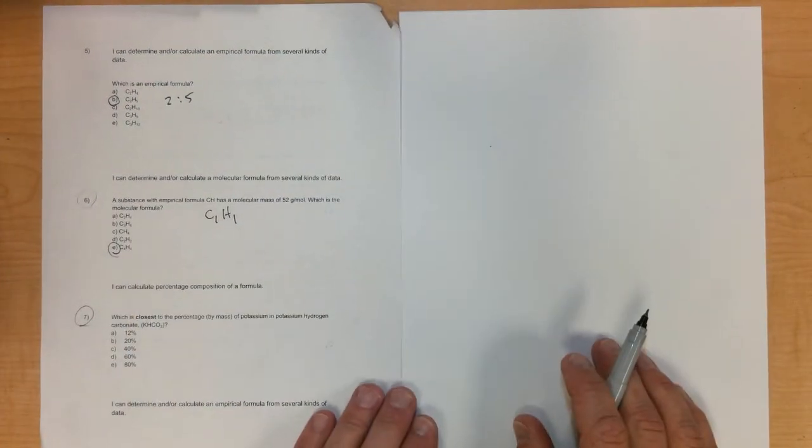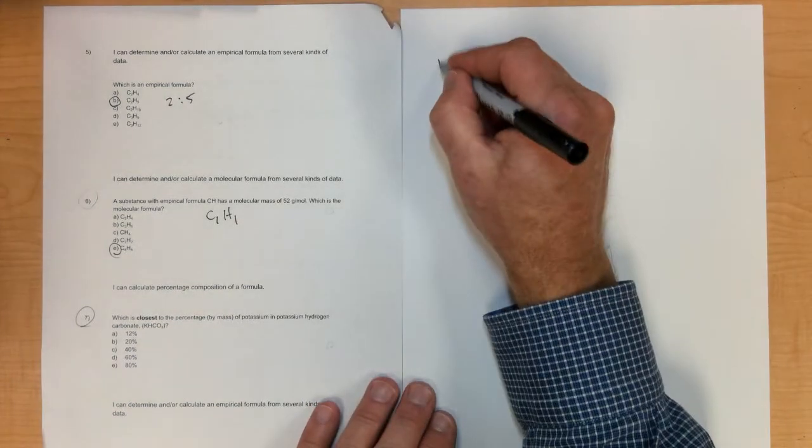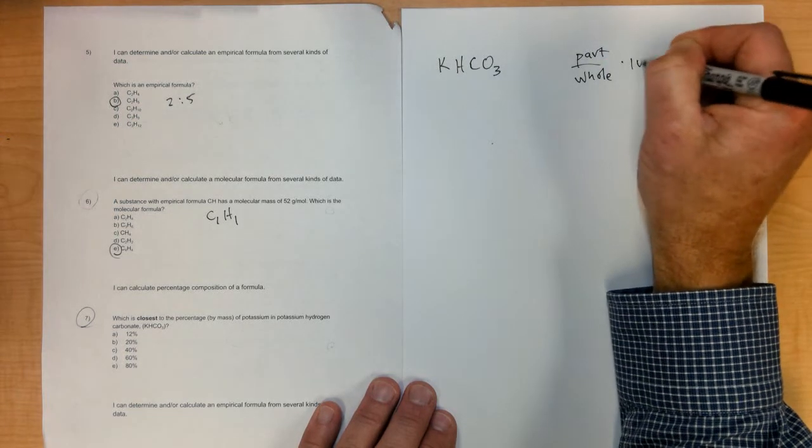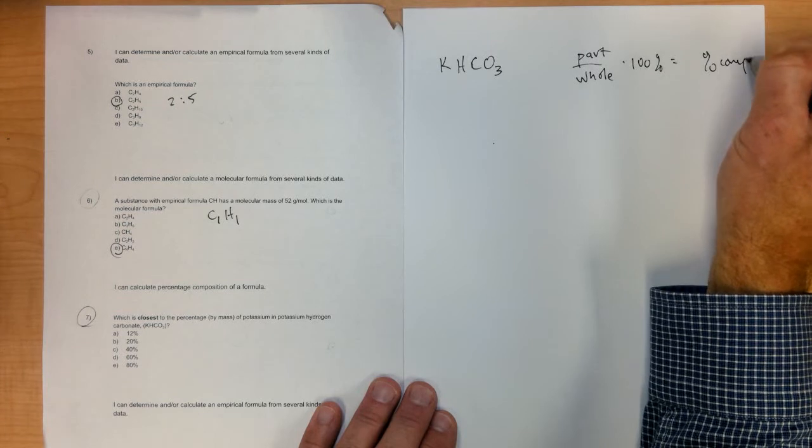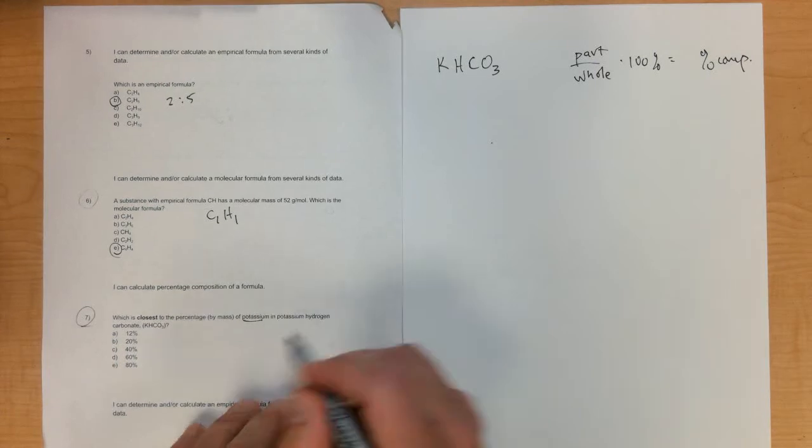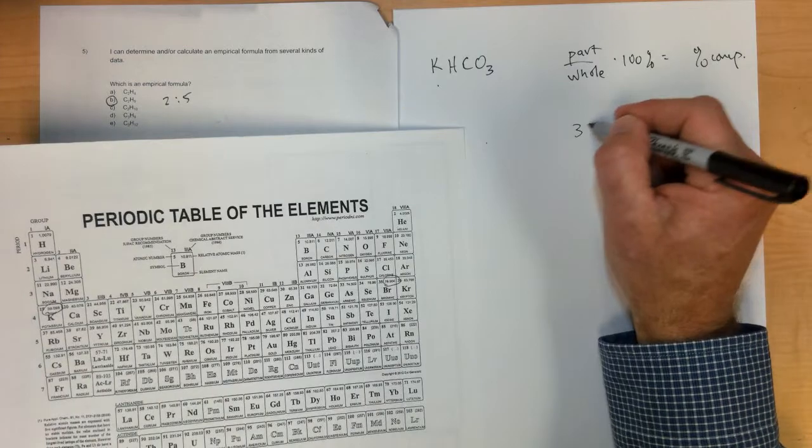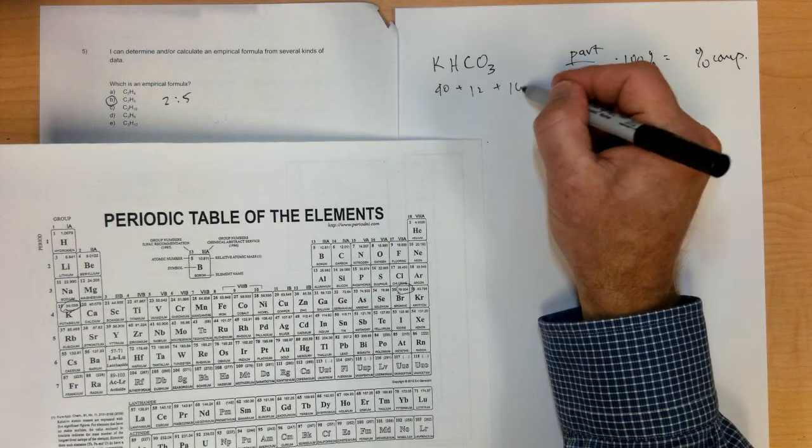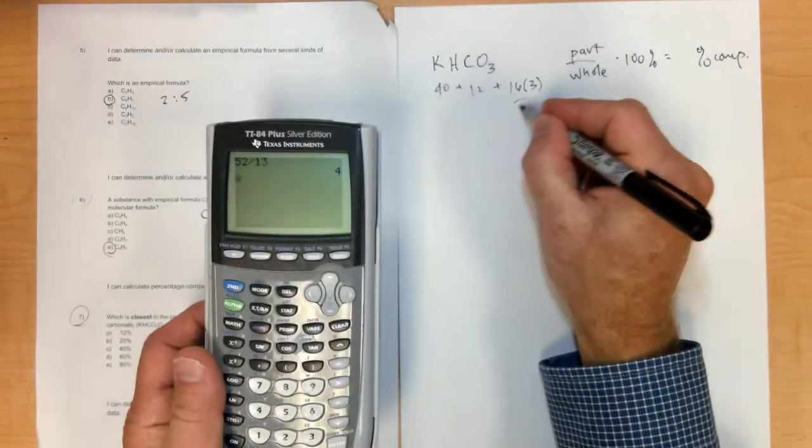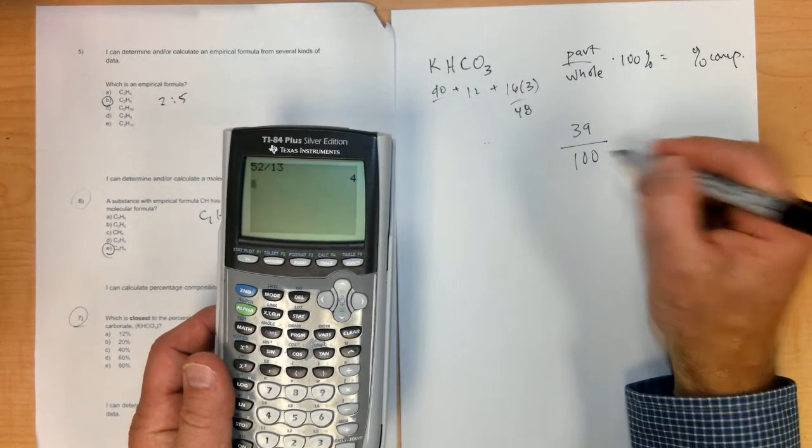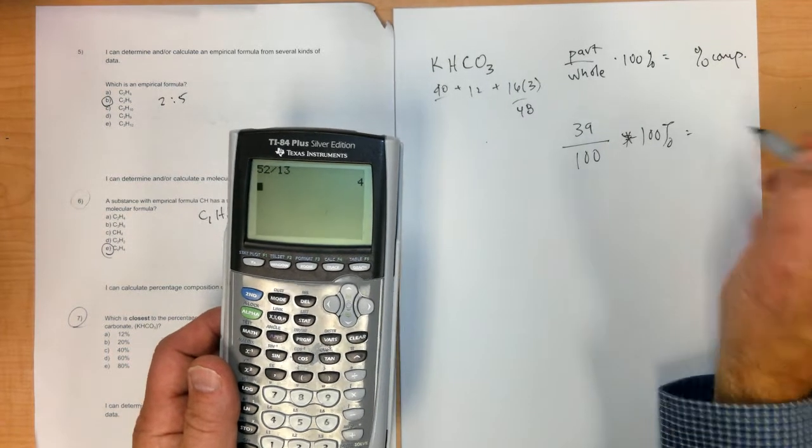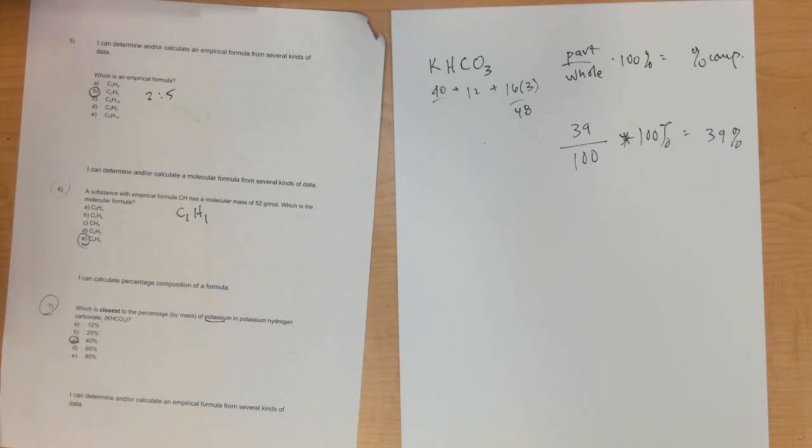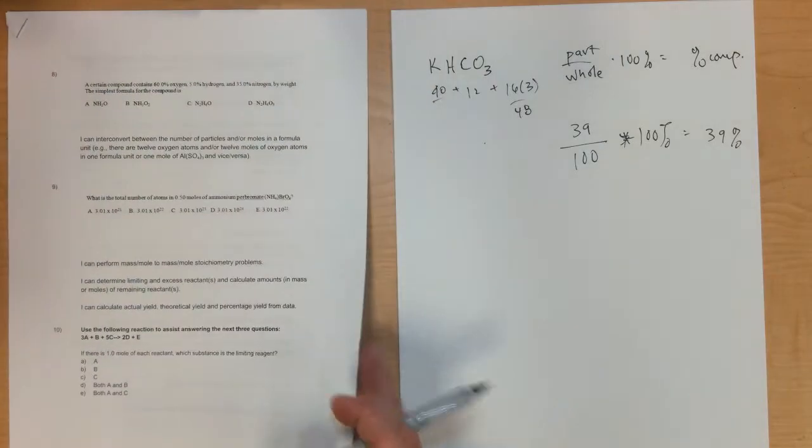Number seven: which is closest to the percentage by mass of potassium in potassium hydrogen carbonate? First, add up the whole thing, because part divided by whole times 100 gives you percentage composition. Potassium is 39. The whole is 39 plus 1 is 40, plus carbon is 12, plus oxygen is 16 times 3. That's 48 plus 12 is 60, plus 40 is 100. So 39 divided by 100 times 100% equals 39%, which is closest to letter C.